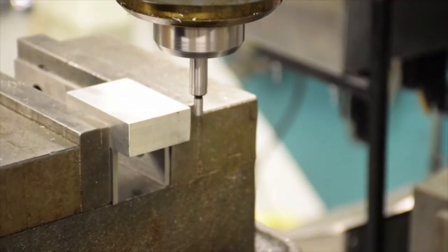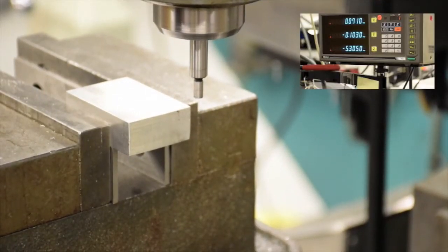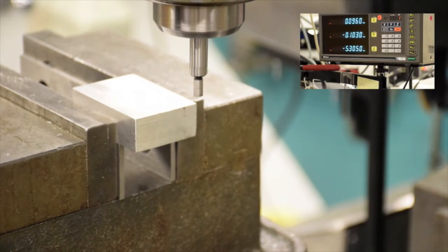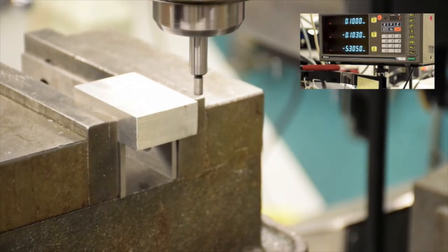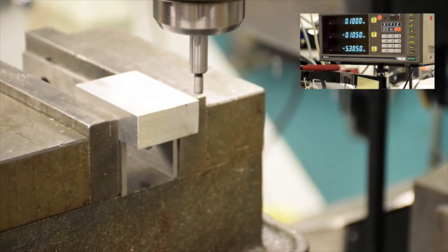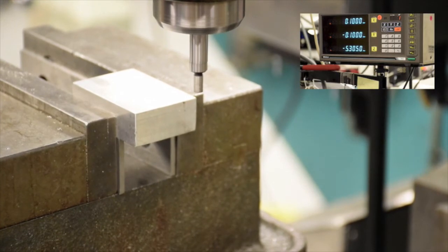After both zeros are set, raise the edge finder and move so the center is close to the corner. On the screen, take both the x and the y to point one and set both to zero. This is half the width of the edge finder, giving you absolute zero of your tool.